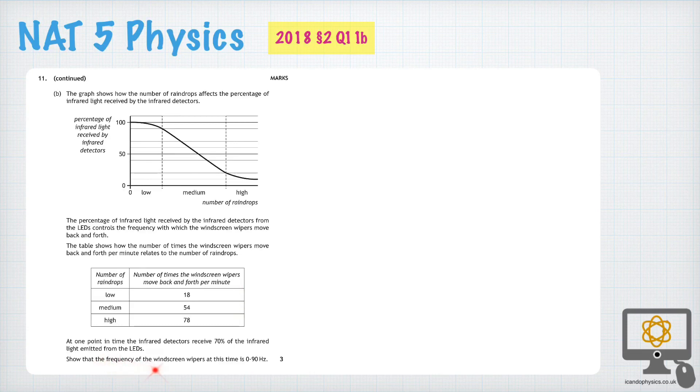And so we're asked to show that the frequency of the wipers is 0.9 whenever there is 70% of the infrared light emitted from the LED.